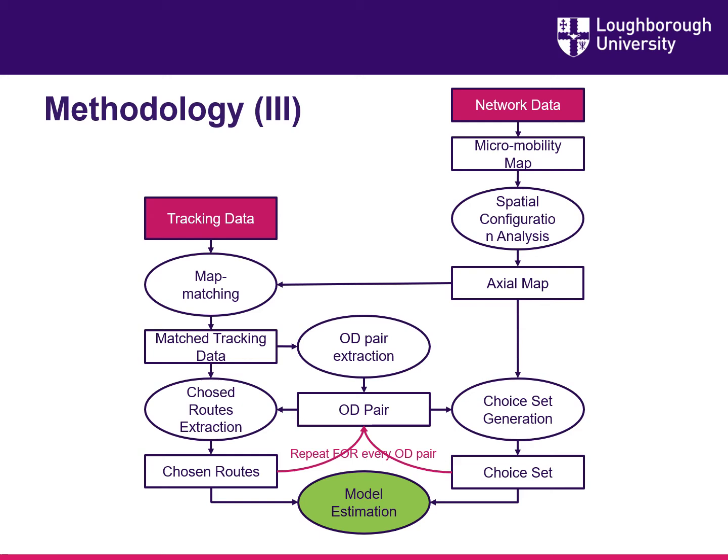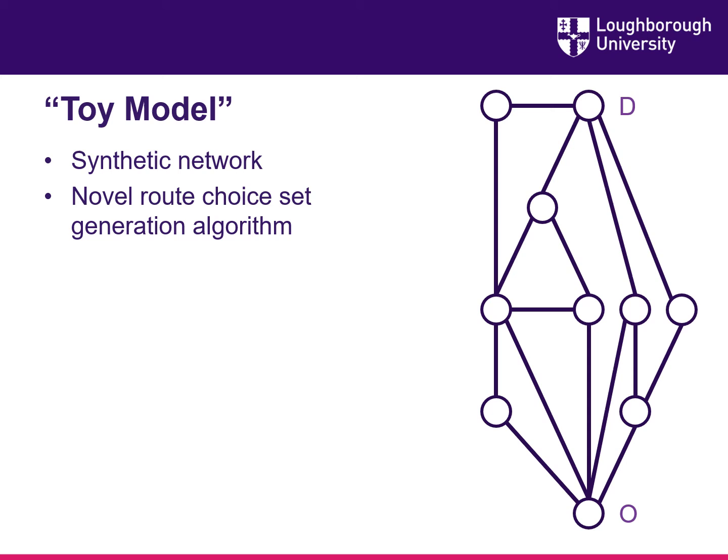What we aim for in our research project is to estimate the discrete route choice model for micromobility. For this we use two types of input data: network data which is passed through a spatial configuration analysis to create an axial map, and tracking data which after being map-matched on the axial map is used for calibration and verification of the model.